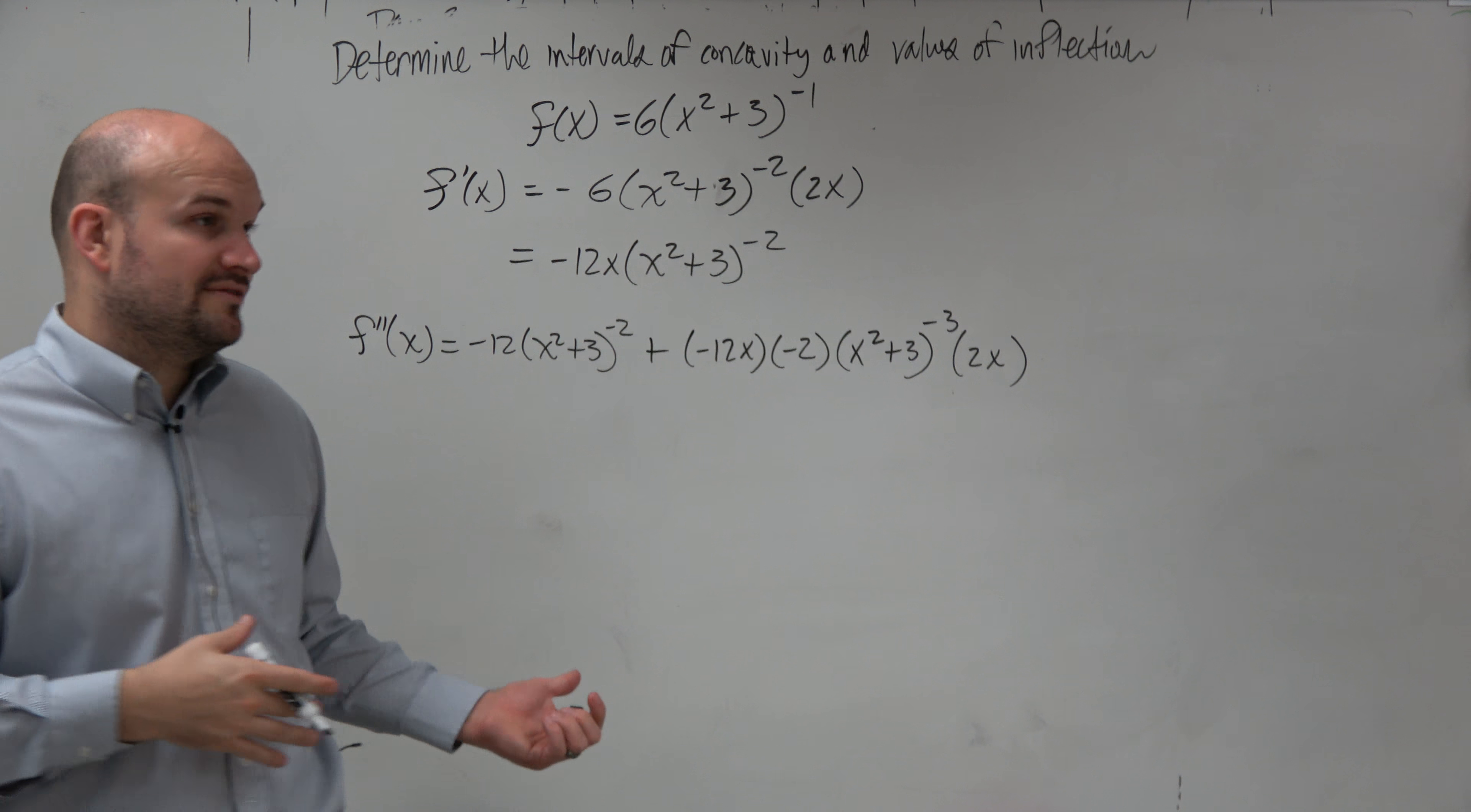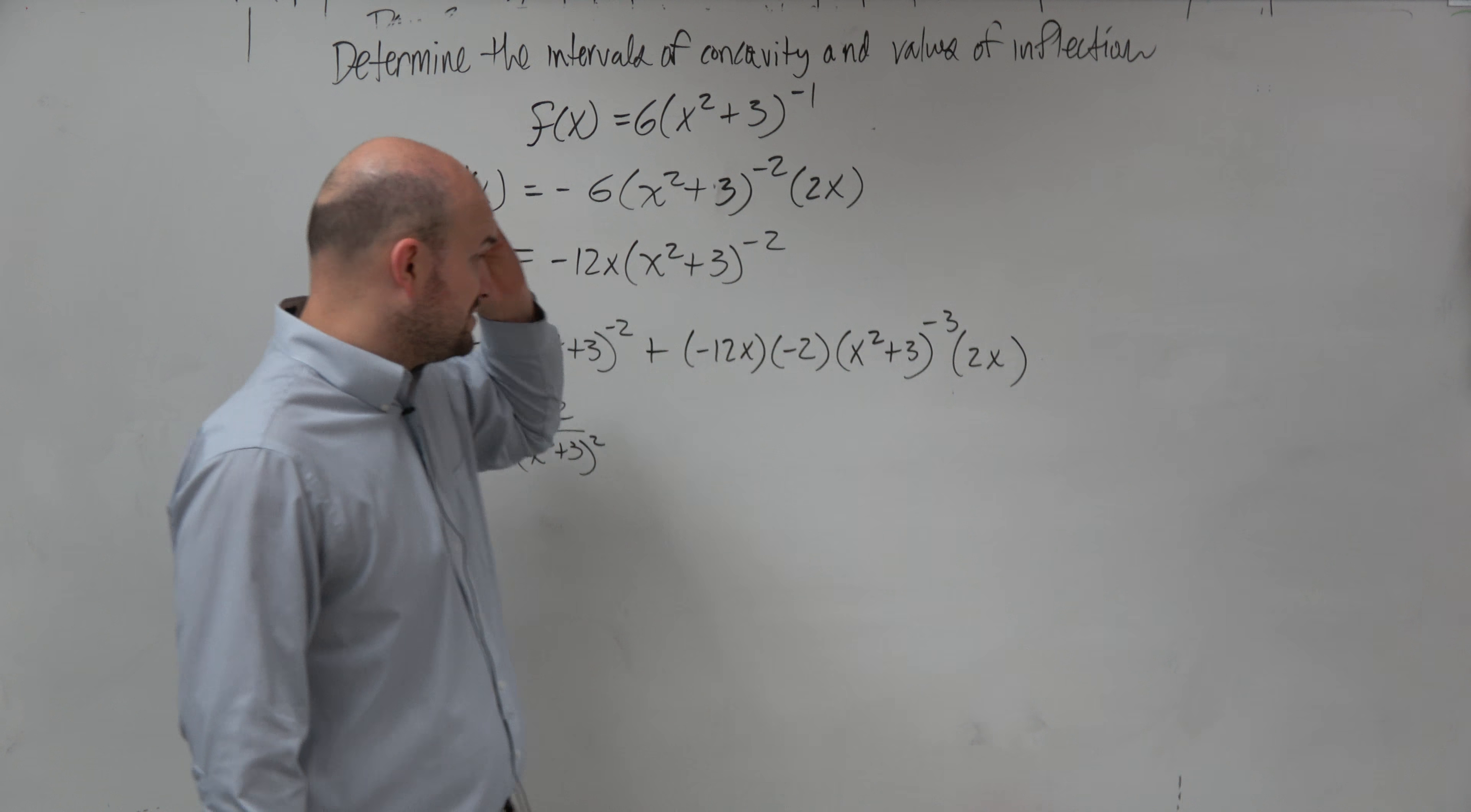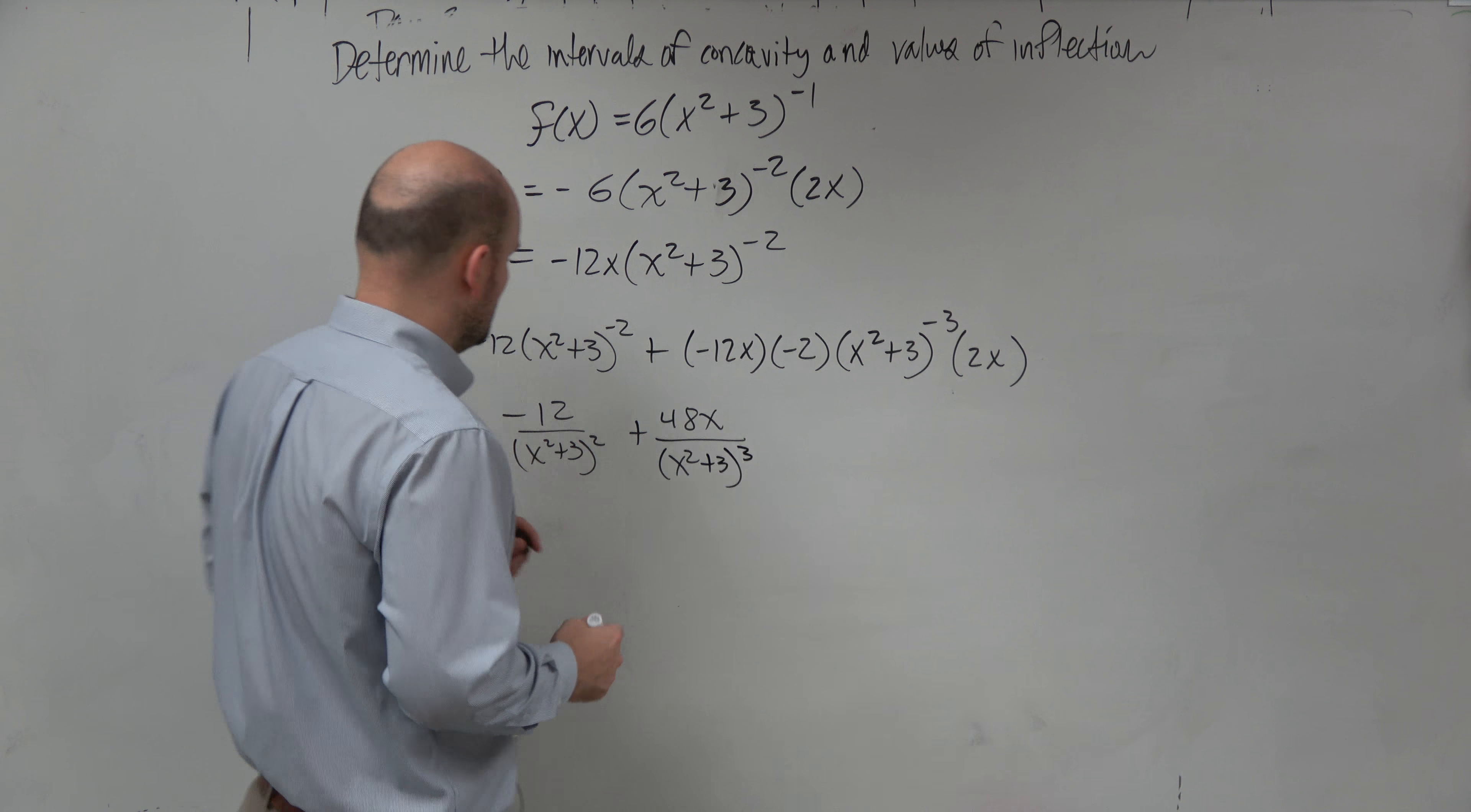So it seems like a lot's kind of going on here. Maybe we can kind of clean some things up and then look at some denominators and see what we need to do. Therefore, I could have this is going to be negative 12 over x squared plus 3 squared. Over here, everything that's in the numerator is negative 2 times 2x, which would be negative 4x, times negative 12 is going to be positive 48x squared, and then that's all over x squared plus 3 cubed.